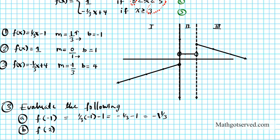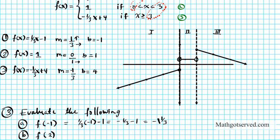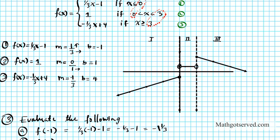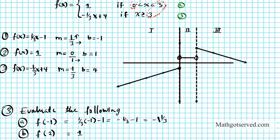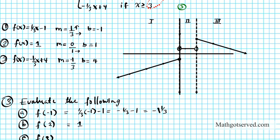Now for f of two: looking at the inequalities, two is going to be with function number two because two is between zero and three. You can see that two is right between zero and three on the graph. So f(2) is simply going to be one, because for any x value between zero and three, your output is always going to be one — it's independent of what your x is.